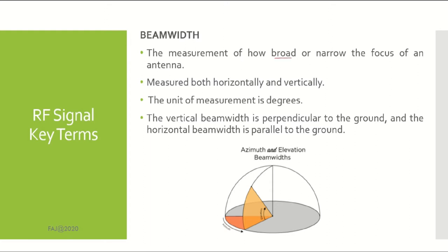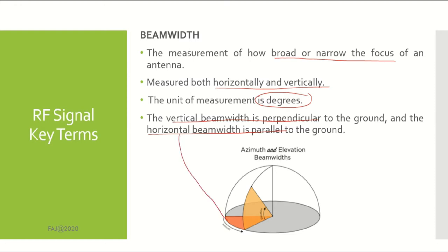Beam width is the measurement of how broad or narrow the focus of an antenna. It is measured both horizontally and vertically, and the unit of measurement is degrees. The vertical beam width is perpendicular to the ground and the horizontal beam width is parallel to the ground. Horizontal beam width corresponds to the azimuth chart, and vertical beam width corresponds to the elevation chart.